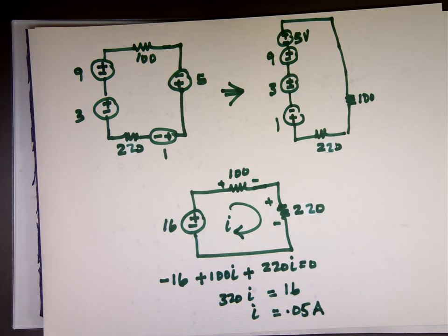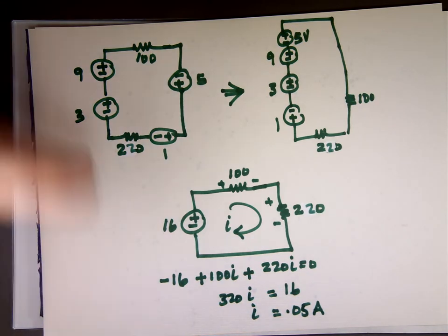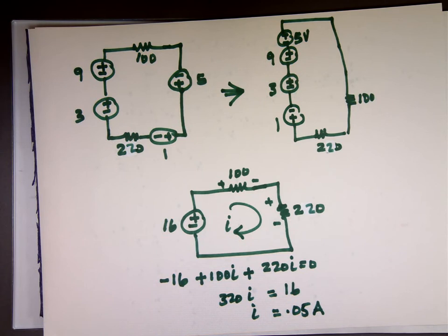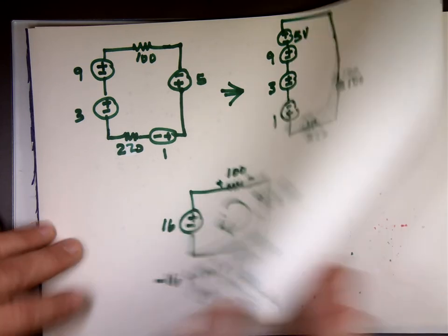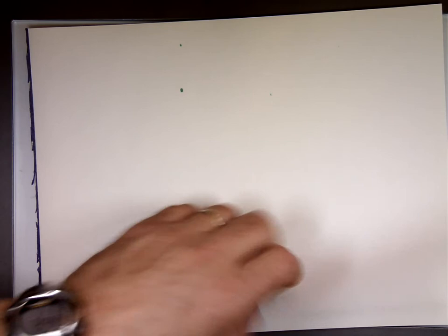So when you have a lot of sources connected in series, you can combine them into one source. What about if you have a lot of current sources connected in parallel? Same thing. I can simplify that into one current source.